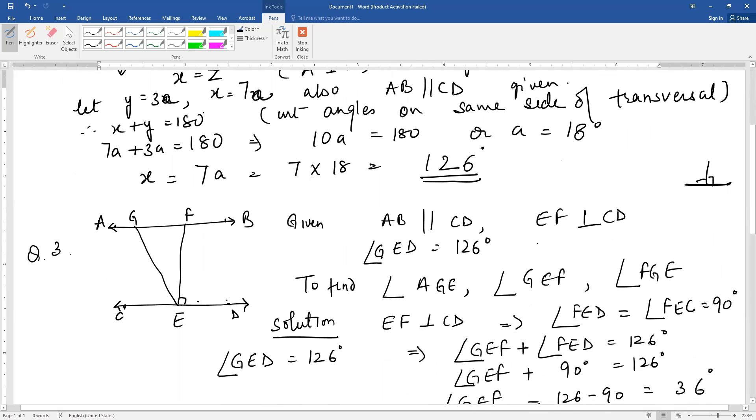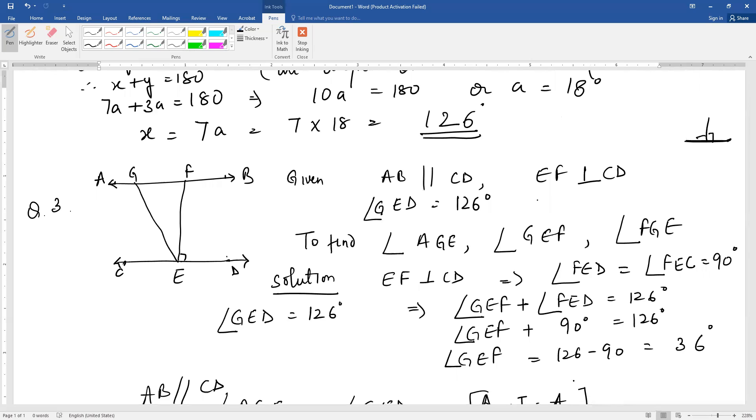Now question number 3. You are given the figure where angle GED is 126 degrees. EF is perpendicular to CD, so angle FED is 90 degrees. That means angle GEF is 126 minus 90, which is 36 degrees.